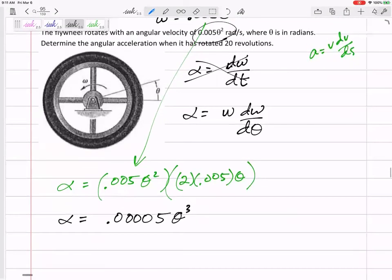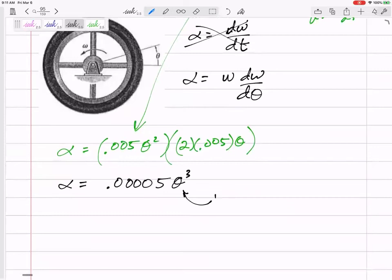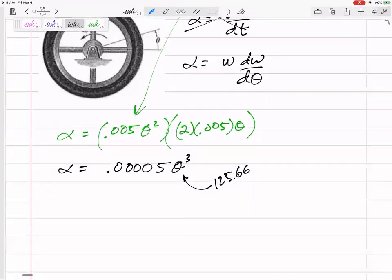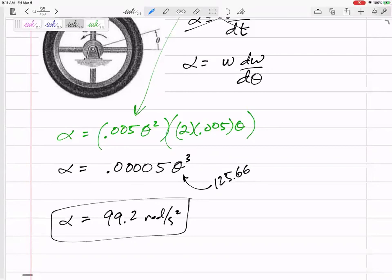And it wants to know the acceleration after it's rotated 20 revolutions. I can't plug in 20, I've got to change revolutions to radians. And it's the same one that we just used: 125.66. So that gives us 99.2 radians per second squared.